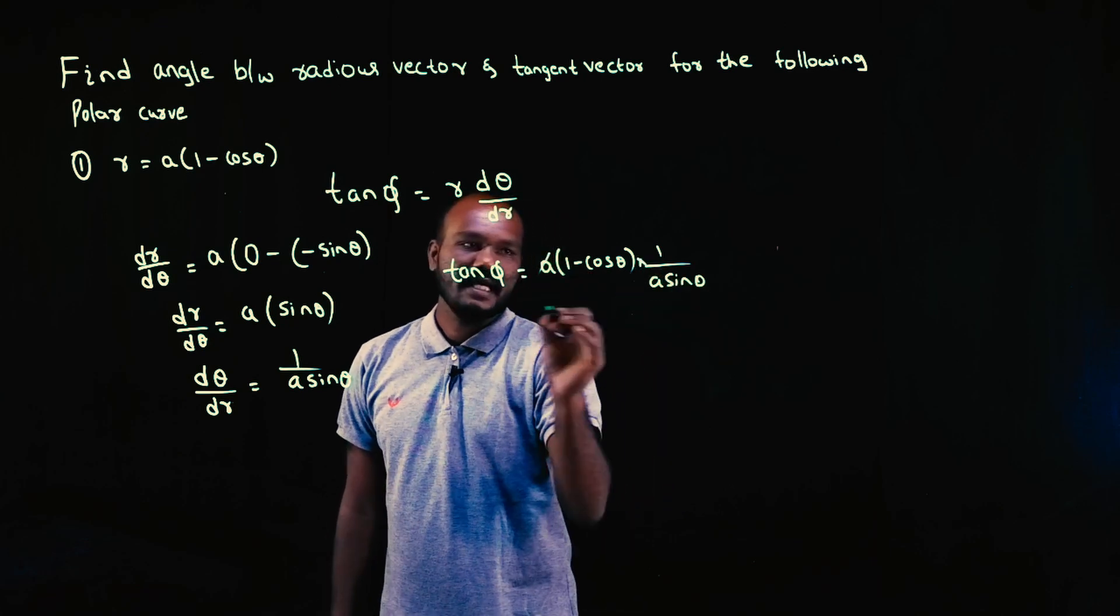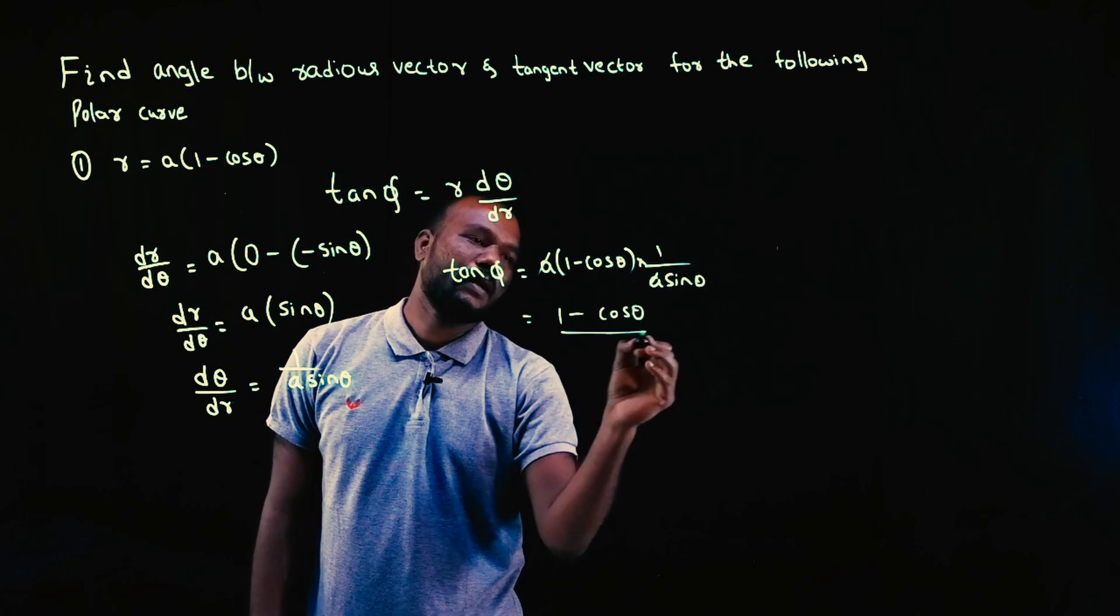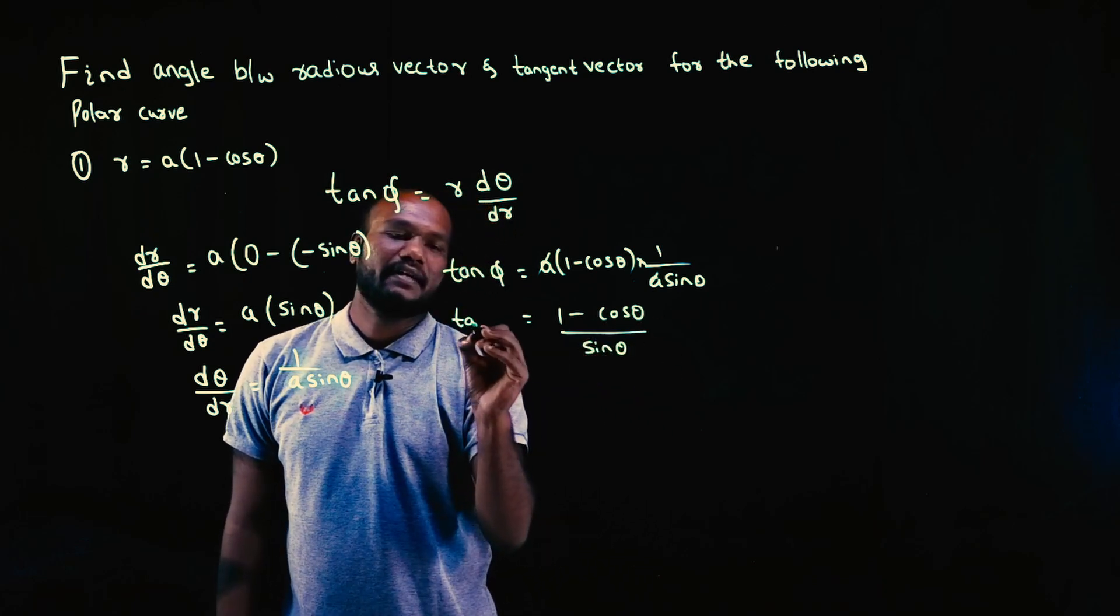This a, this a can be cancelled. So I get numerator as 1 minus cos θ upon sin θ. This is tan φ.